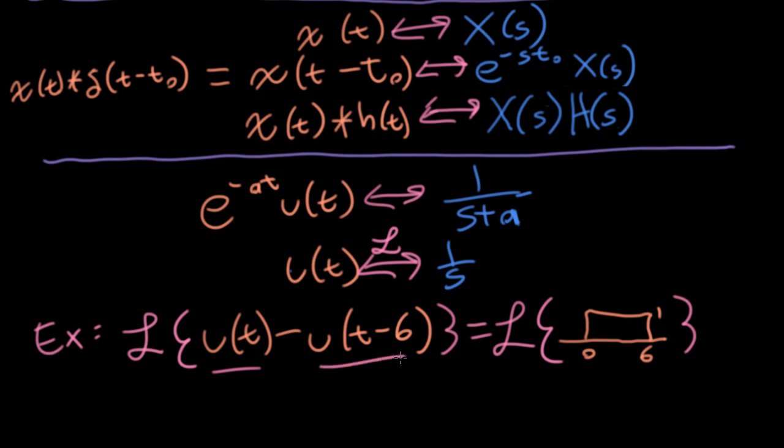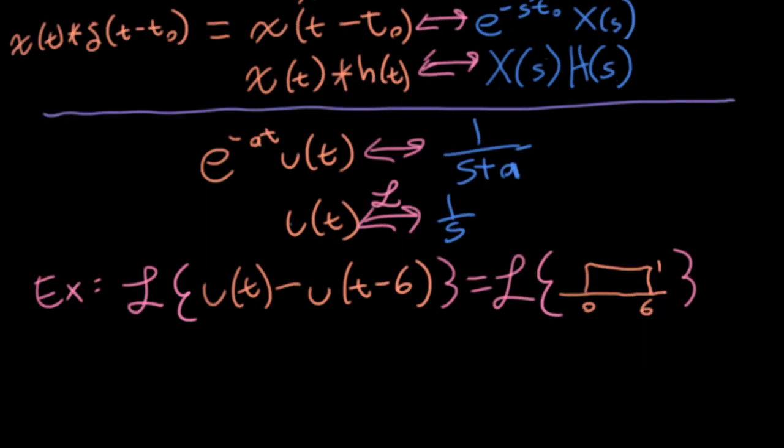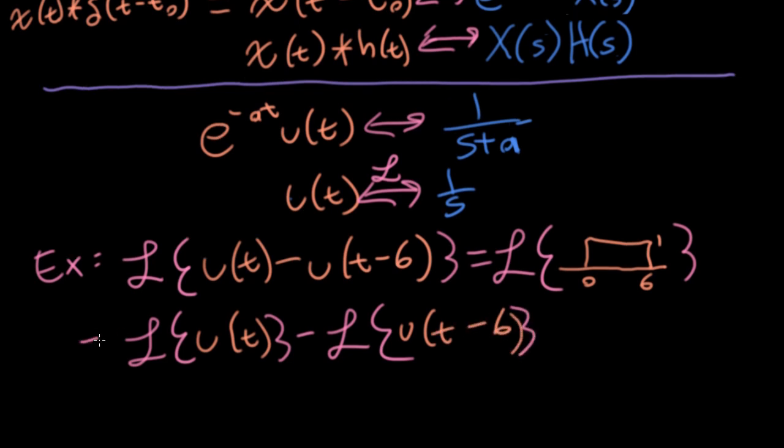But if you're doing things with Laplace transforms, you really want to turn them into mathy type of things. So by linearity, we can take the Laplace transform of u of t and subtract the Laplace transform of u of t minus 6. Okay, so the Laplace transform of u of t is this 1 over s, and the Laplace transform of the unit step shifted to the right by 6. Well, I need to take it and multiply it by e to the s minus 6. And the way you will usually see this written is as having a 1 over s sitting out in front and a 1 minus e to the minus 6s.